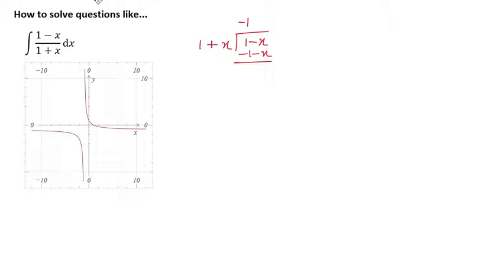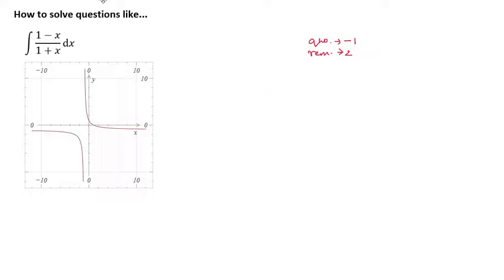So if we multiply (1 plus x) by minus 1, we get minus 1 and minus x. We multiplied the divisor by minus 1. When we subtract (minus 1 minus x) from (1 minus x), minus minus gives plus, so x and x cancel out and we have 2. Therefore, we get a remainder of 2 and a quotient of negative 1.